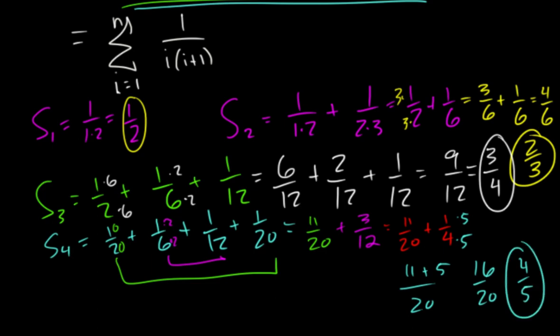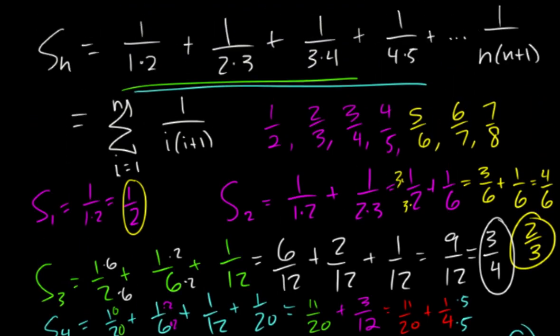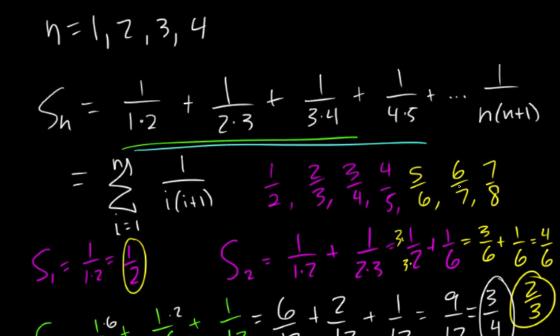All right now if I write down my answers in order we got 1 half, 2 thirds, 3 fourths, 4 fifths. Now if I had to just guess what the next one is following this pattern see how it goes 1 2, 2 3, 3 4, 4 5, it's probably going to be 5 6, 6 7, 7 8. Now we didn't prove that it's going to be that but the pattern seems like it's going to be that.